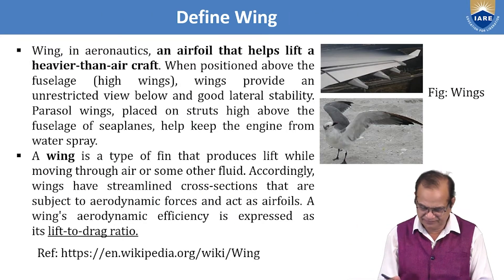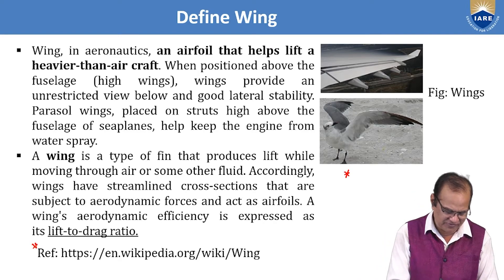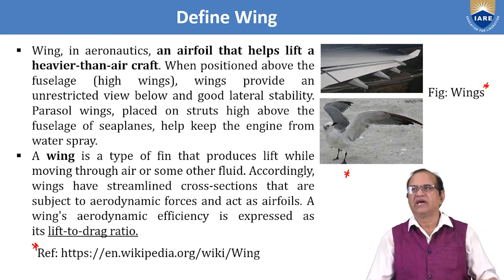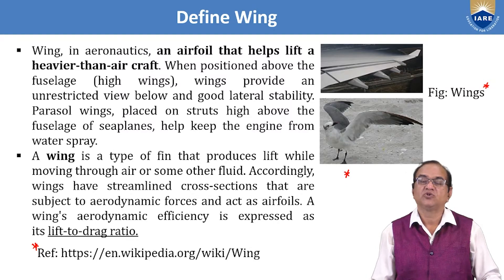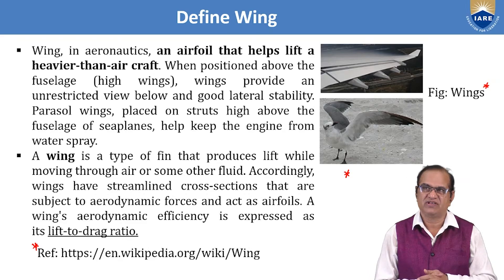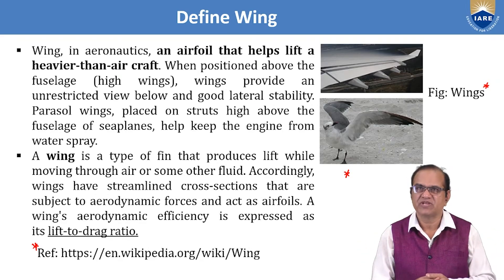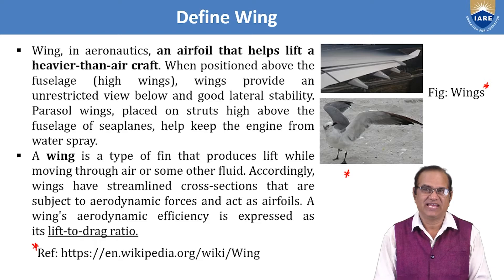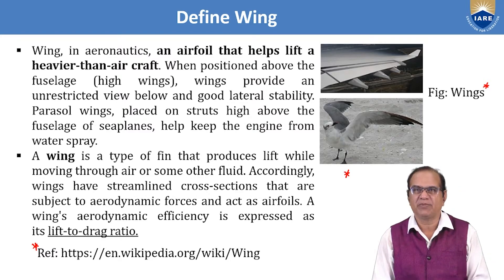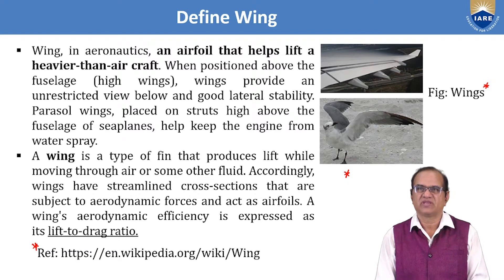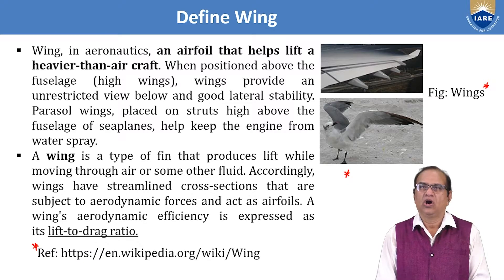Next is the wing. The wing is the main part that generates lift for the aircraft and is in an aerofoil shape. In aeronautics, a wing is an airfoil that helps lift a heavier-than-air aircraft. When positioned above the fuselage it is called a high wing, which provides an unrestricted view below and good lateral stability. Parasol wings placed high above the fuselage of a seaplane help keep the engine from water spray.